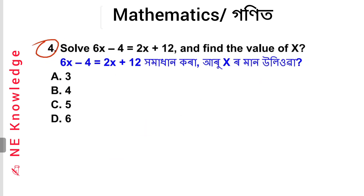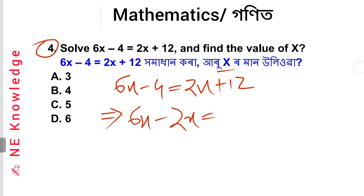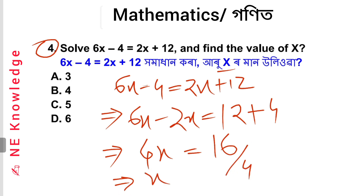Question number 4: Solve 6x − 4 = 2x + 12. Moving x terms to the left: 6x − 2x gives 4x. Moving constants: −4 to the right gives +4. So 4x = 12 + 4 = 16, therefore x = 4. Option number B is correct.